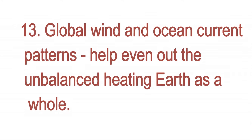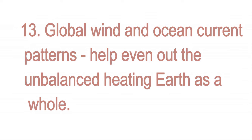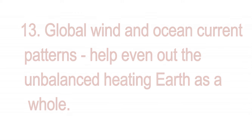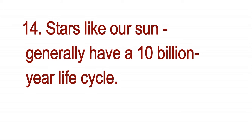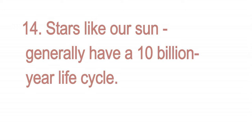Thirteen: global wind and ocean current patterns help even out the unbalanced heating of earth as a whole. Fourteen: stars like our sun generally have a 10 billion year life cycle.